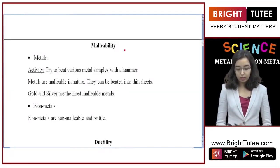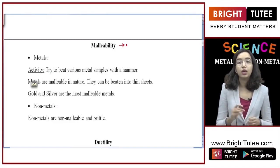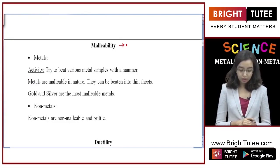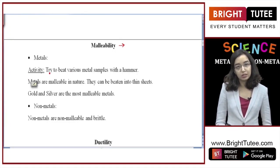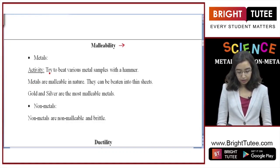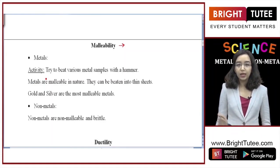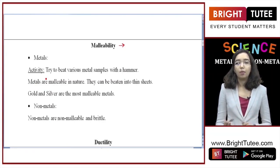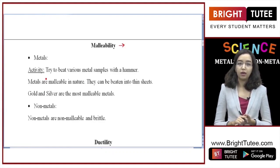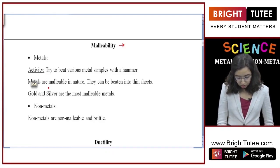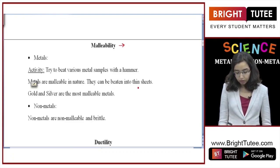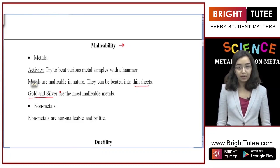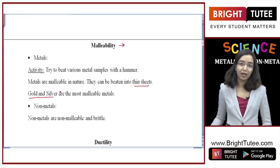The next property is malleability — the property of an element to be hammered down into thin sheets. You can verify this by taking different metal samples and beating them with a hammer. On striking again and again, the metal gets compressed and starts forming a sheet-like structure. But when external force is applied on nonmetals, they break — that is why they are called brittle. So metals are malleable in nature, and gold and silver are the most malleable metals, whereas nonmetals are not malleable and are brittle in nature.